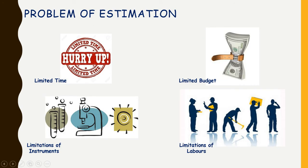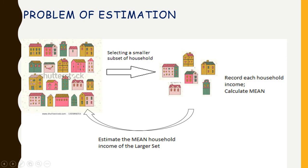The next problem of statistics I want to discuss is the problem of estimation. We are always bound by constraints — may it be time, budget, limitations of instruments, or limitations of labor. All these constraints do not allow us to reach each and every unit to the fullest. For example, my objective is to calculate or estimate the average household income of all houses in a particular geographical region, which is a big region.